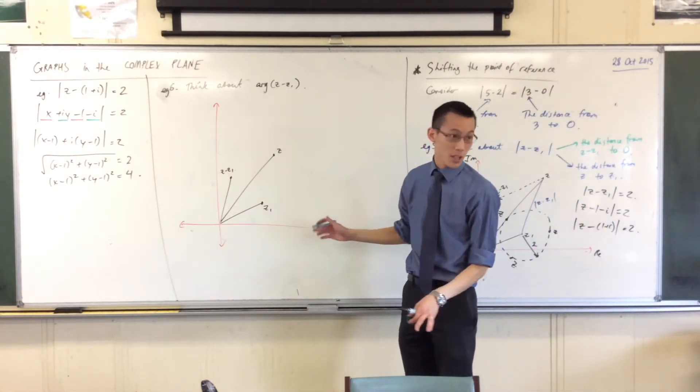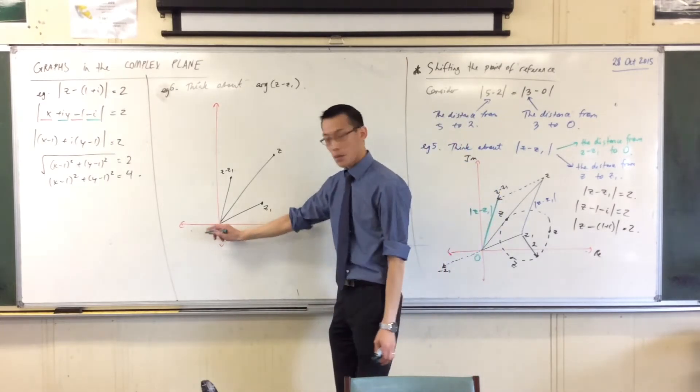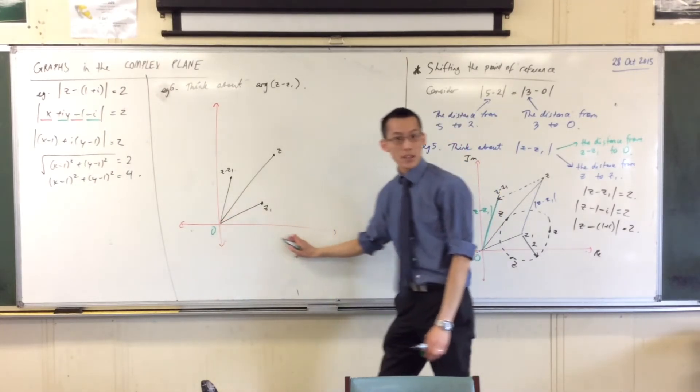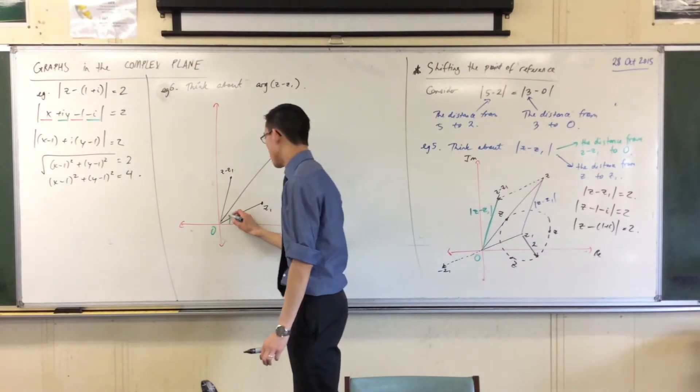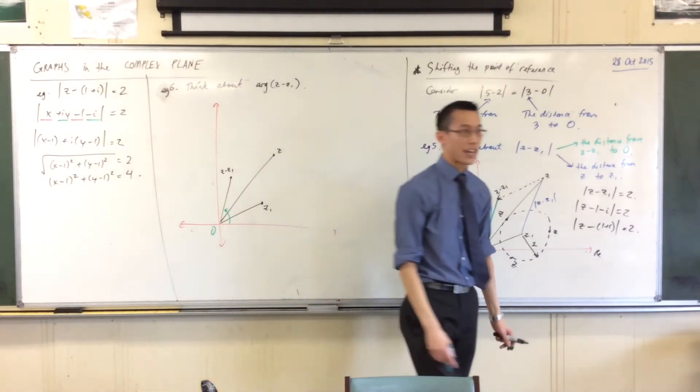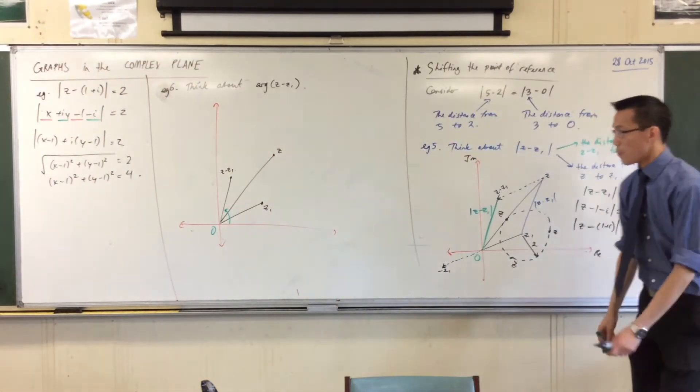Because I'm still thinking in terms of the origin, right? You go from the origin, you take the positive real axis, and then up you go. There's the angle. You okay with that? That's the argument of z minus z1.